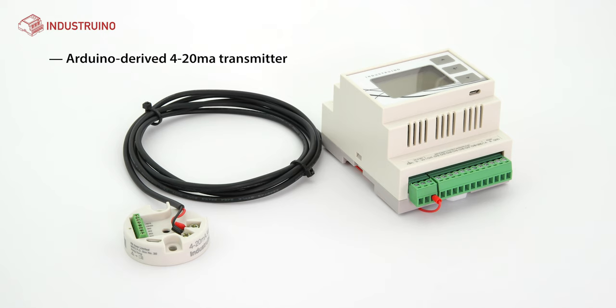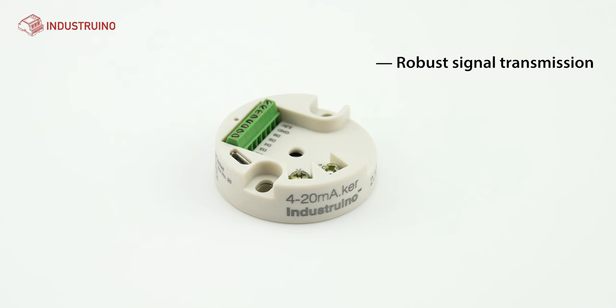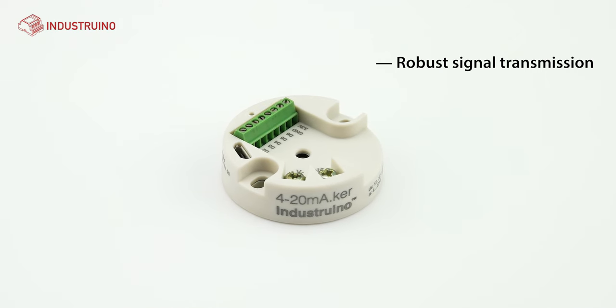Industrino 420Maker is an Arduino derived 420mA sensor transmitter. 420Maker allows you to take any Arduino compatible sensor and turn it into a loop powered long distance sensor. It ensures robust signal transmission over long distances and in electromagnetically harsh environments.